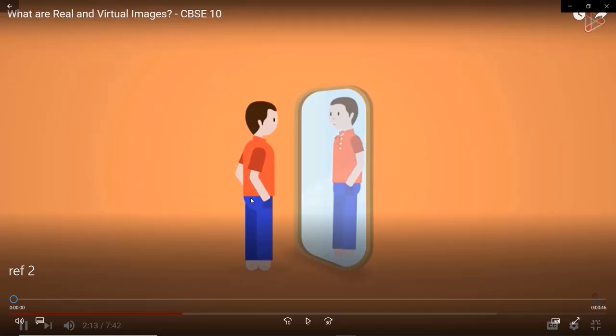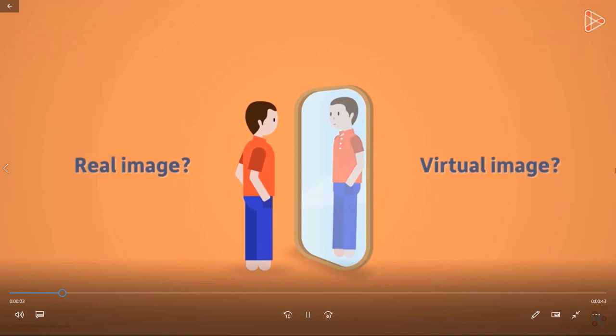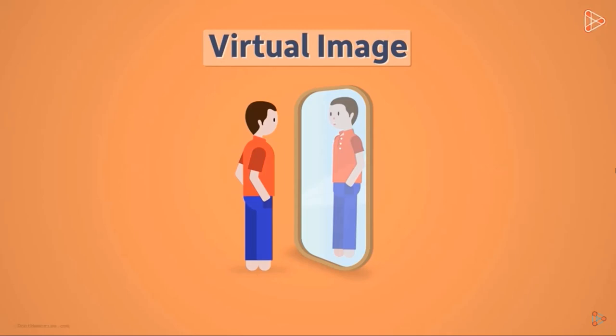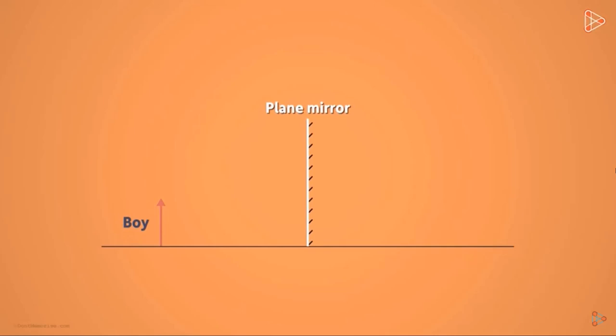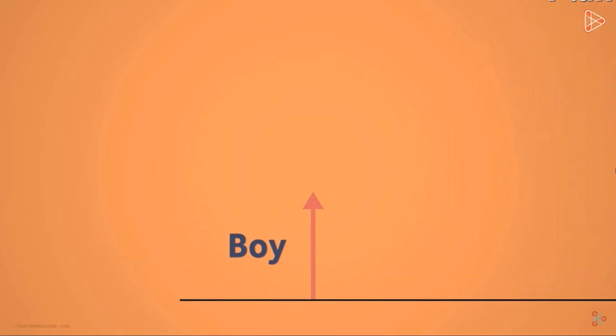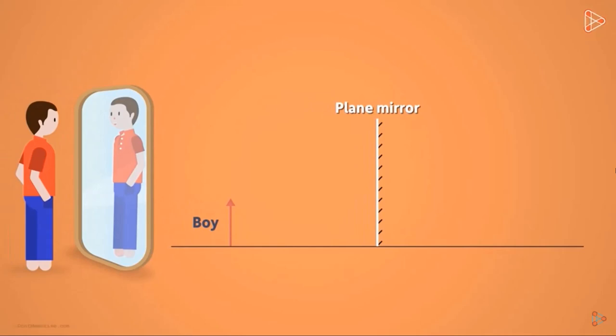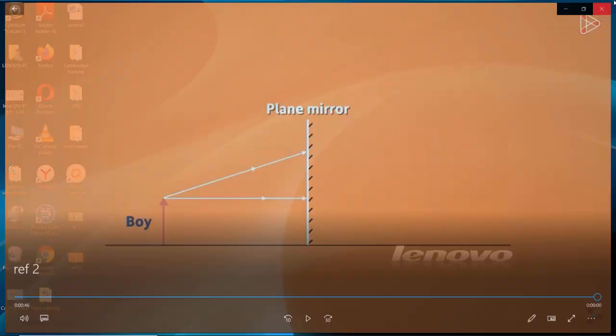Is the image you see in a mirror a real image or a virtual one? This image is a virtual image. To explain this, let's simplify — represent the boy with an arrow pointing up in front of a plane mirror. When we see the image in the mirror, it seems the image is formed somewhere behind the mirror, but there is nothing behind the mirror. The light rays seem to come from a location behind the mirror.